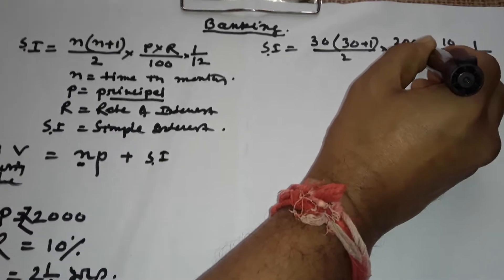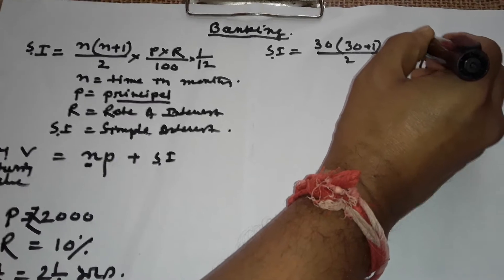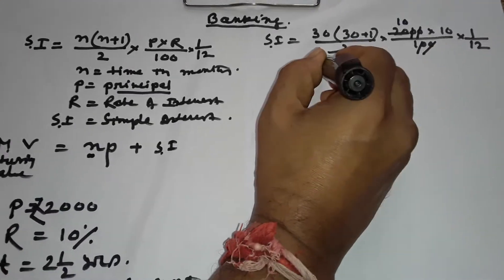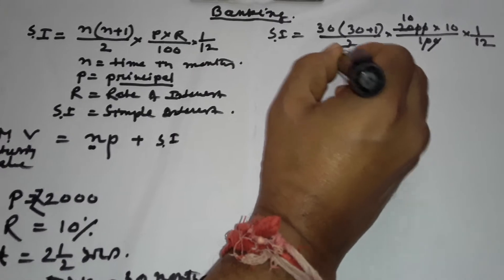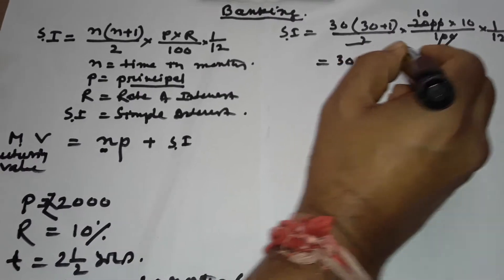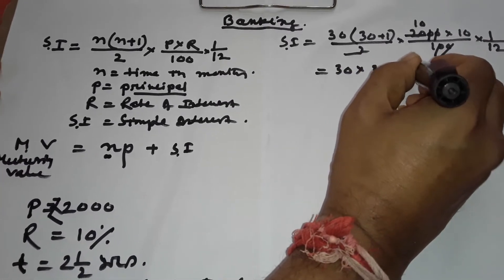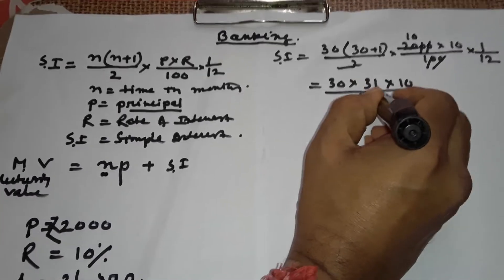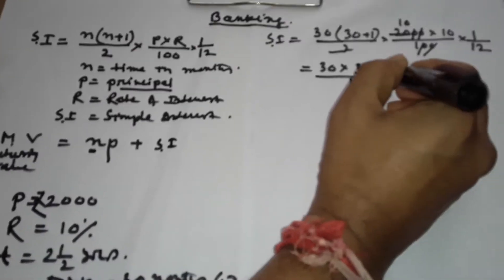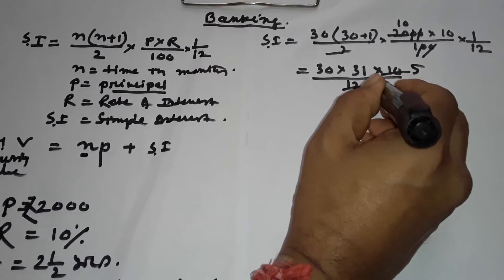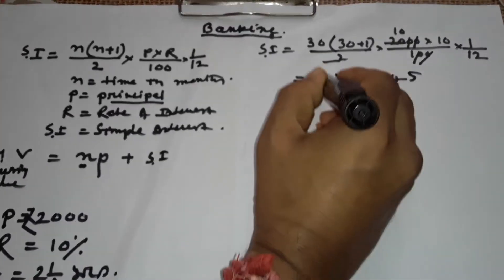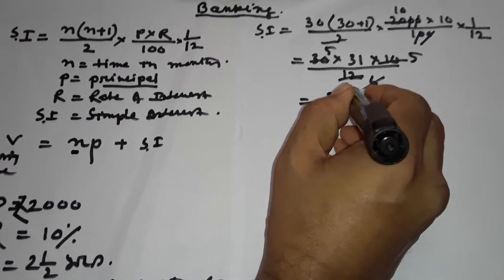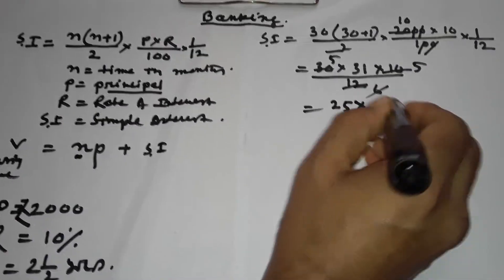Simplifying the calculation: cancelling zeros, we get 30 × 31 × 10 / 12. Cancelling by 5, we get 6 and 5, giving 25 × 31. After the rough calculation, SI = ₹775.